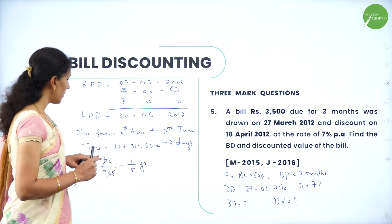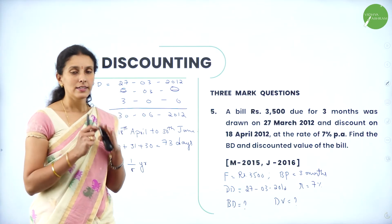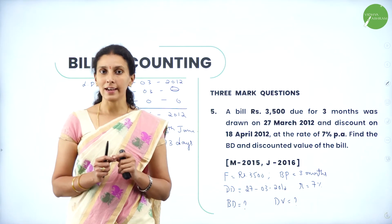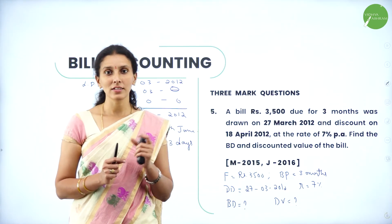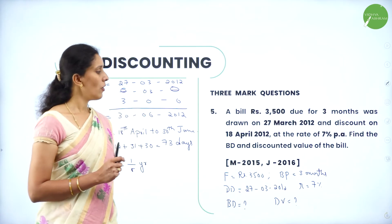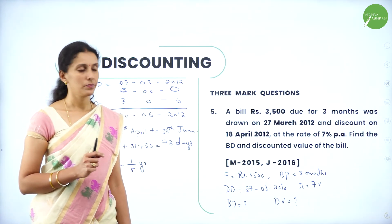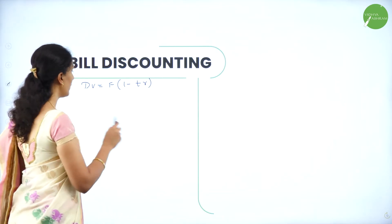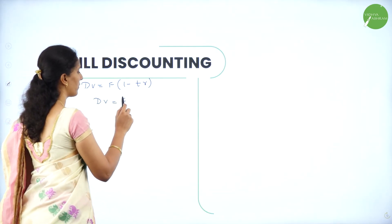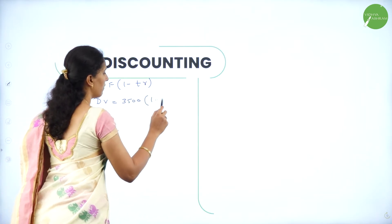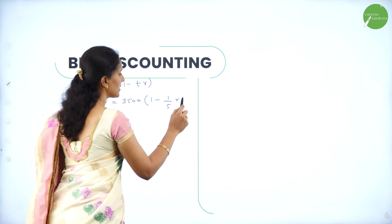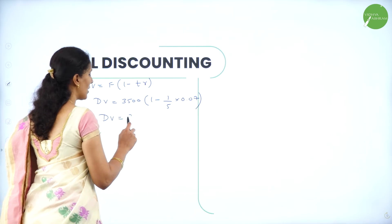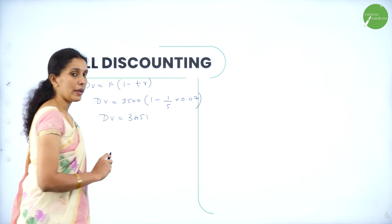We have to convert time in terms of years. Time T equals 73 divided by 365. When you cancel it, it becomes 1/5 years. So time T equals 1/5 year. Now we need to calculate the discounted value using DV equals F into 1 minus TR: F is 3500, so 3500 into 1 minus (1/5 into 0.07). On solving, the discounted value is Rs. 3451.